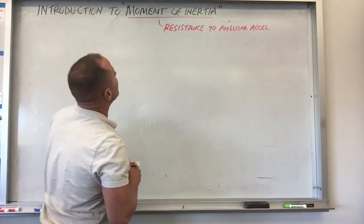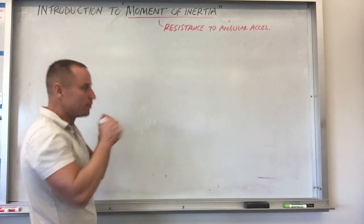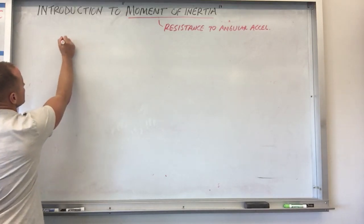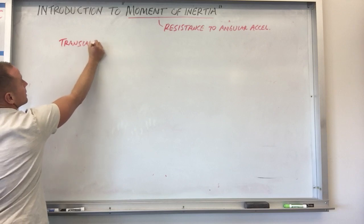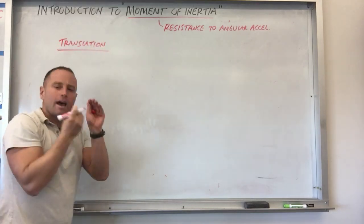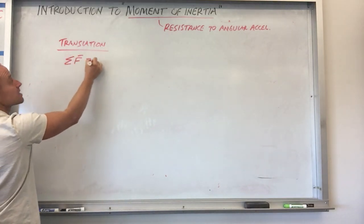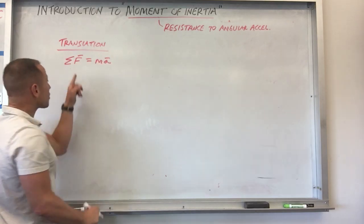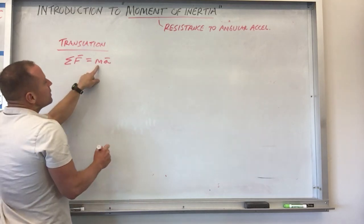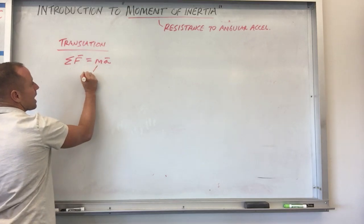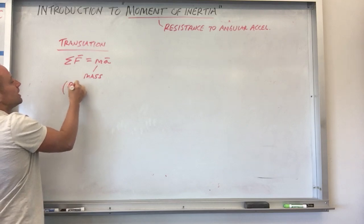To really build up a sense of what moment of inertia is, it helps to go back to things that are moving in straight lines, or translating. When you want to learn how an object is going to translate, you generally talk about the forces that act on it — the sum of the forces is ma. We can think of forces as a cause of acceleration, but then you have mass in front of the acceleration, which is really a resistance to linear acceleration.